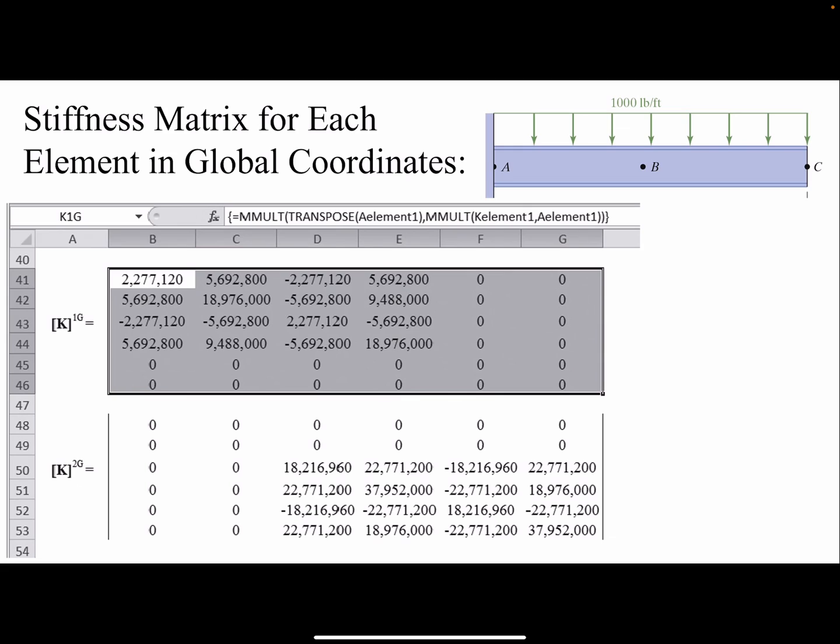I can write them in a global form, so I would have 6 by 6. I just added two rows and two columns and changed my 4 by 4 to 6 by 6 so I can add them together. I write my local stiffness matrices in a global form because the forming is in global, but still I don't have my global stiffness matrices until I add them together.